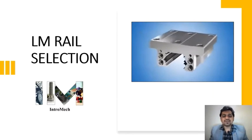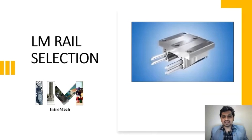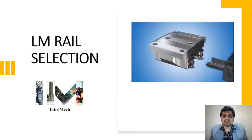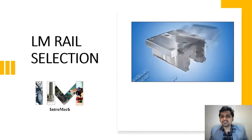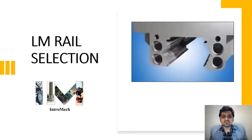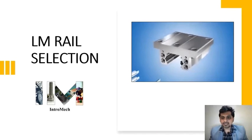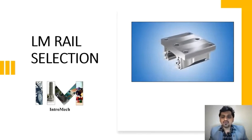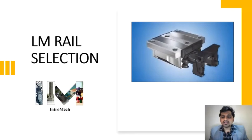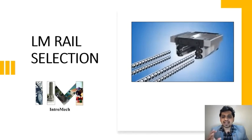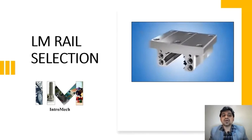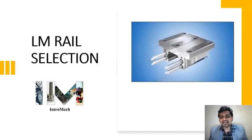Hello and welcome to our channel Intro Mech, where we discuss basic mechanical engineering concepts. In our previous session we saw how to create an account on the THK site and use the calculator for model selection. The LM linear motion guide is widely used in industries to move heavy loads, with balls inside the guide that reduce friction — that is the main advantage.